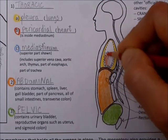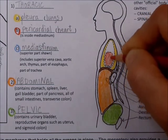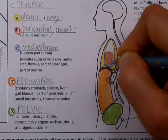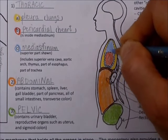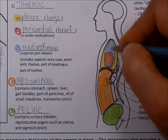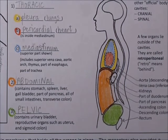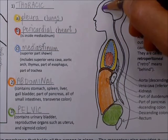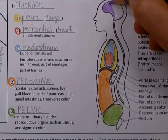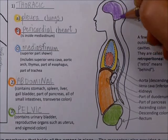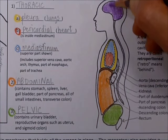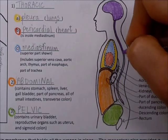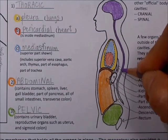This red here is pericardial. Also on the official list, you'll see the cranial cavity and the spinal cavity — or sometimes they call it the vertebral.